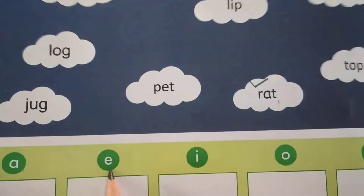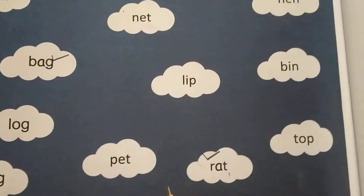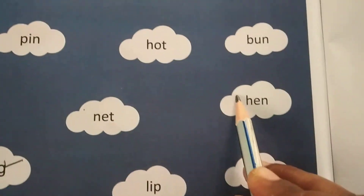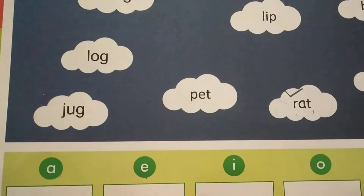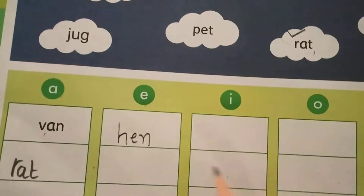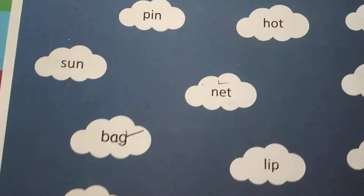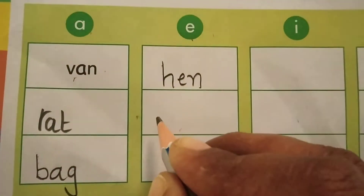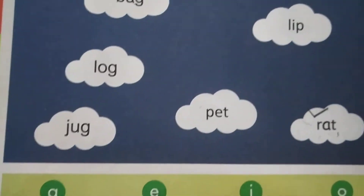Now find E words — E should be there in that word. Find here: H, E, N — hen. E is there. Write H, E, N — hen. Completed. Find one more word here. Net — N, E, T — net. Write N, E, T — net. Completed.